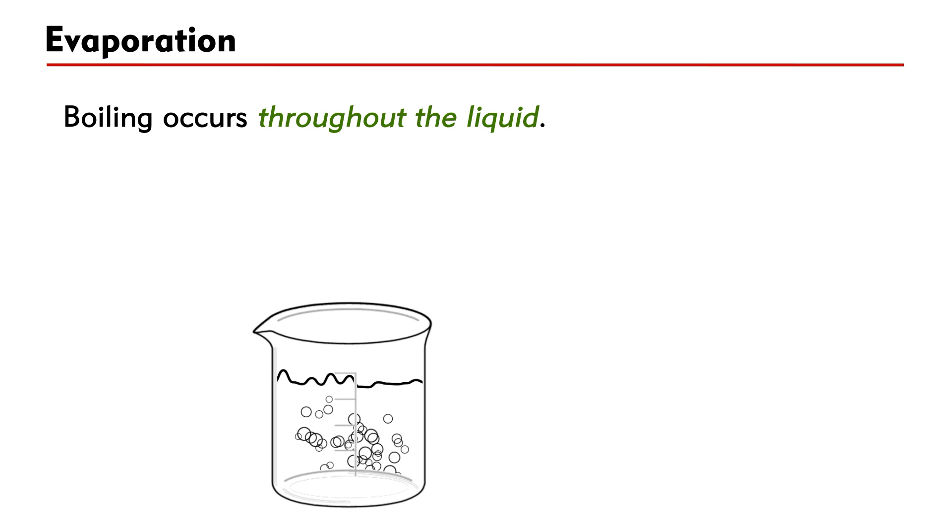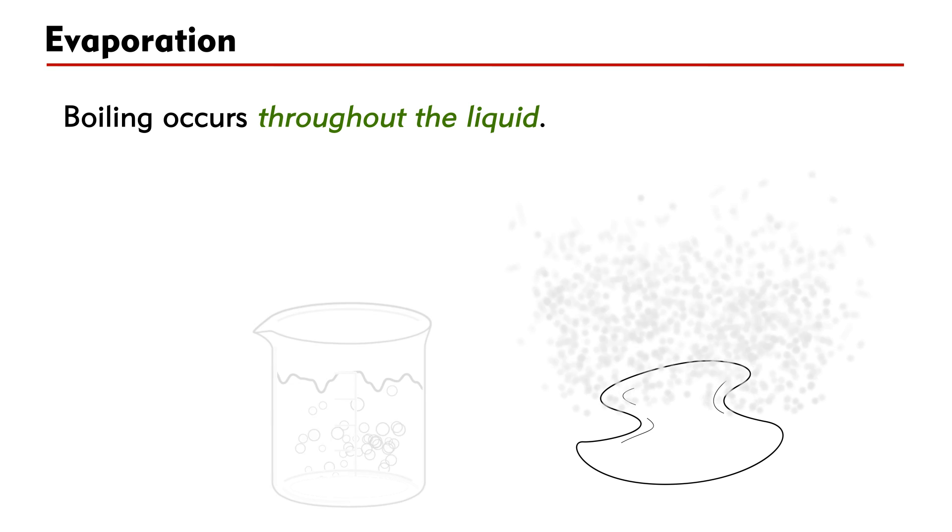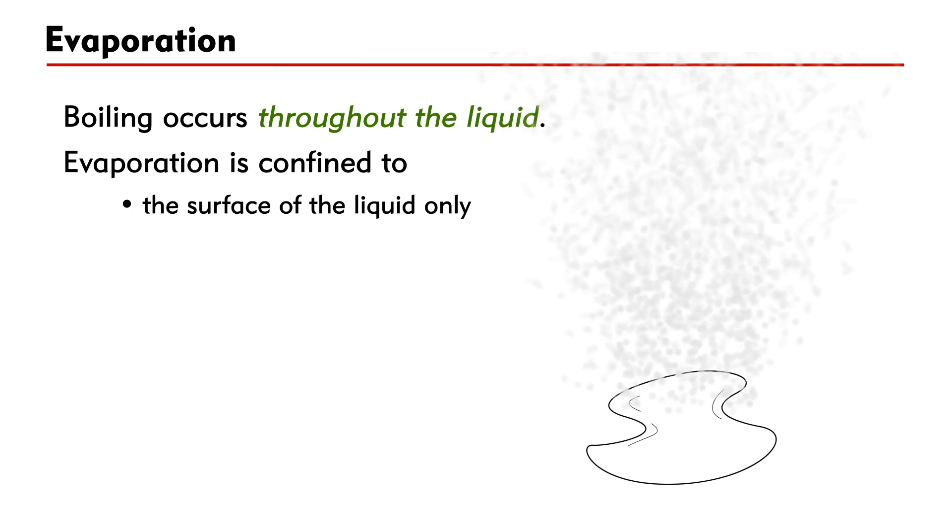When boiling occurs, we can see bubbles everywhere inside the liquid. It means that boiling occurs throughout the liquid. On the other hand, evaporation is confined to the surface of the liquid only and no bubbles will be formed.